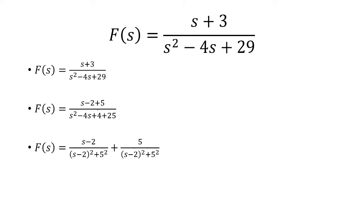That's going to be the denominator, and then from there, we're going to make two fractions. The first fraction is going to be s minus 2, and the second fraction is going to have 5 in the numerator.